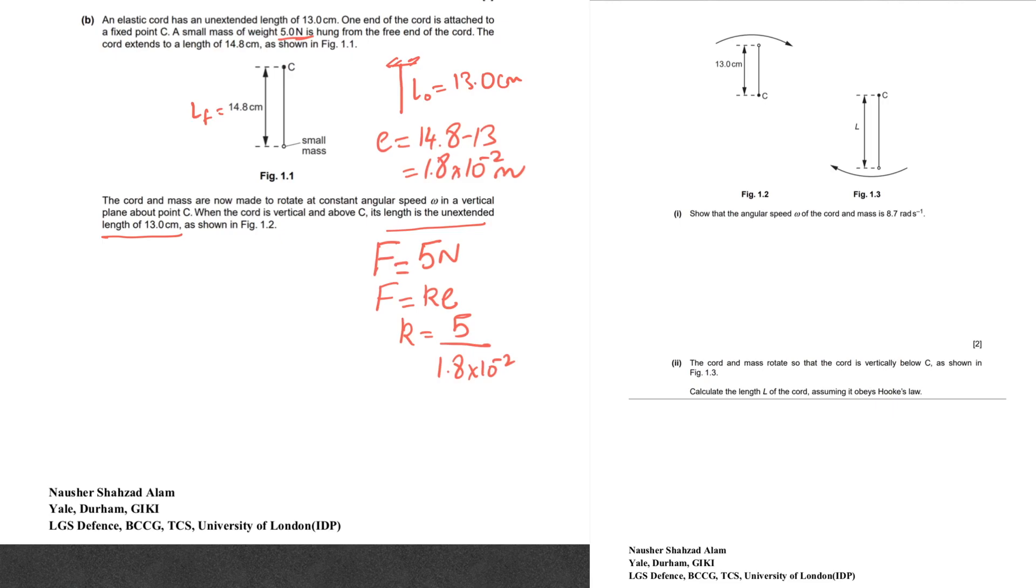Now moving on, it says show that the angular speed omega of the cord and the mass is 8.7 radians per second. They've shown you two positions: the top position and the bottom position. Remember this is a vertical circle. When you reach the top, the final length is 13 and the initial length was also 13. Basically what does that mean? That means there is no tension in Figure 1.2 because the final length equals the initial length. So the question is then: why is it spinning? What is providing its centripetal force?